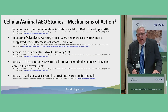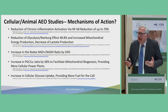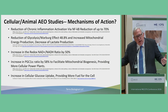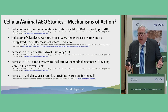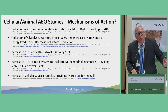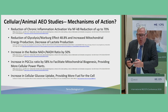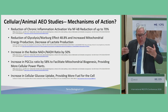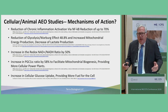We also see an increase in the NAD to NADH ratio, which was shown by Hans Krebs, and we see an increase in PGC1-alpha, which facilitates mitochondrial biosynthesis — so we're making more mitochondria. And lastly, we see an increase in cellular glucose uptake, not only in animal models but in a clinical trial in diabetics. So we're bringing in more glucose, directing it to the mitochondria, producing more energy, and using less of that energy for inflammation.